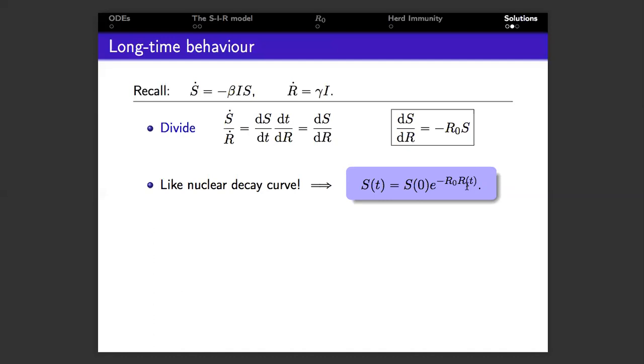Here again are the equations for S and R. We will divide the first equation by the second equation. So dividing the left hand sides gives us dS by dt times dt by dR. Now contrary to what you may have heard at A level, it is possible under some circumstances which apply here to treat these dt's as if they were numbers and to just cancel them like you would in a fraction. Now this leaves dS by dR, or the rate of change of S with respect to R.